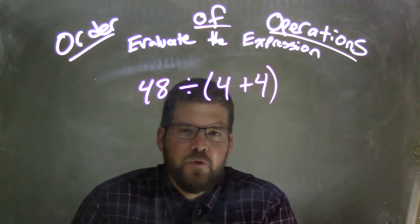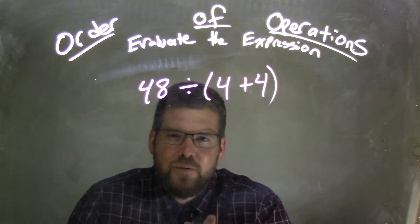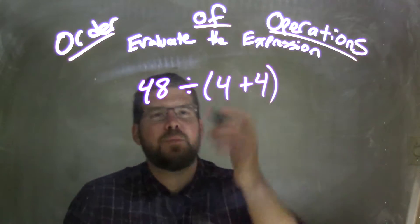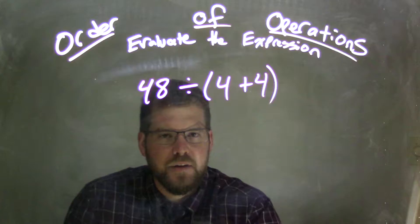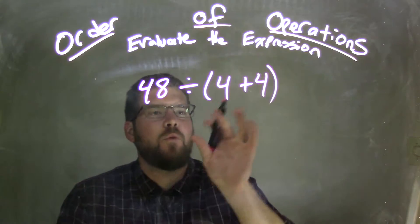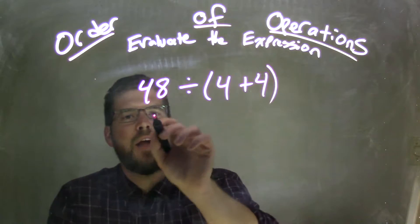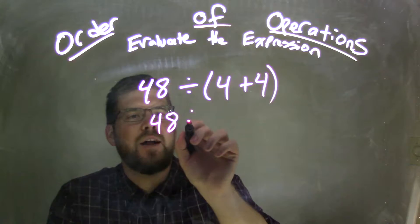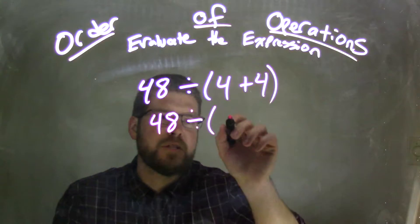4 plus 4 comes first. Well, why is that? Well, 4 plus 4 needs to come first because it's inside of our parentheses. So 4 plus 4 comes first. It's in the parentheses, so now we have 48 divided by whatever 4 plus 4 is, which is 8.